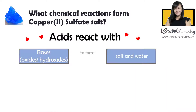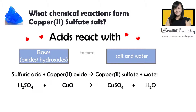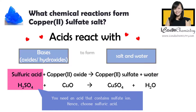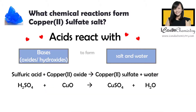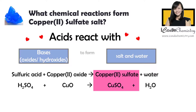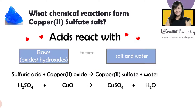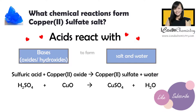What about reaction with oxide? Can we make use of the reaction of acid and oxide to make copper 2 sulfate? Yes, we can. Similarly, to provide the sulfate, we will choose sulfuric acid. And for the oxide, we need to choose an oxide that contains copper 2 ion, hence we will use copper 2 oxide. When copper 2 oxide reacts with sulfuric acid, copper 2 sulfate is formed together with water. In this reaction, no gas will form, hence we will not observe any effervescence.